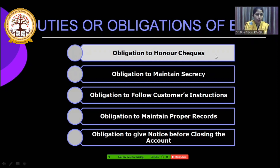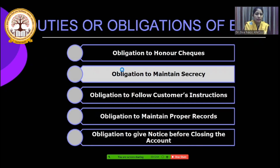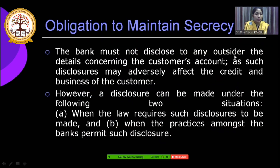The second obligation is to maintain secrecy. Transactions between the customer and the banker should be kept extremely private and should not be shared with any outside agency. Maintaining customer secrecy is an obligation of the banker. The bank must not disclose to any outsider the details concerning the customer's account, because such disclosures may affect the credit and business of the customer.